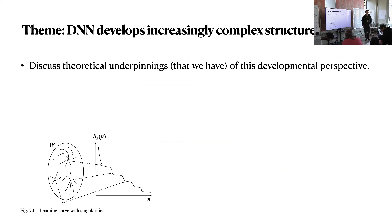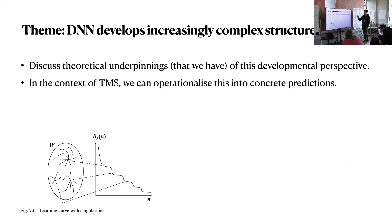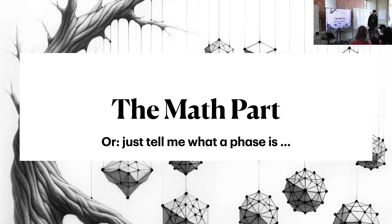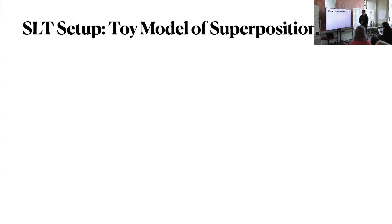We'll discuss the theoretical underpinnings we have for certain parts of this perspective. In the context of TMS — and this is why we care about TMS — we can operationalize these theoretical results into predictions, and then we can run experiments and test those predictions. We'll see the results of those experiments. The question you should have at the back of your mind while looking at the math part is: what part of that math can hint at properties of what we would call a phase?